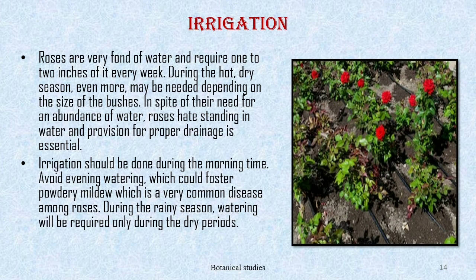Irrigation: roses are very fond of water and require 1 to 2 inches of water every week; during the hot dry season even more may be needed depending upon the size of the bush. Despite their need for abundant water, roses do not like standing in water, and provision for proper drainage is essential. Irrigation should be done during the morning time; avoid evening watering, which fosters powdery mildew, a very common disease among roses. During the rainy season, watering will be required only during dry periods.